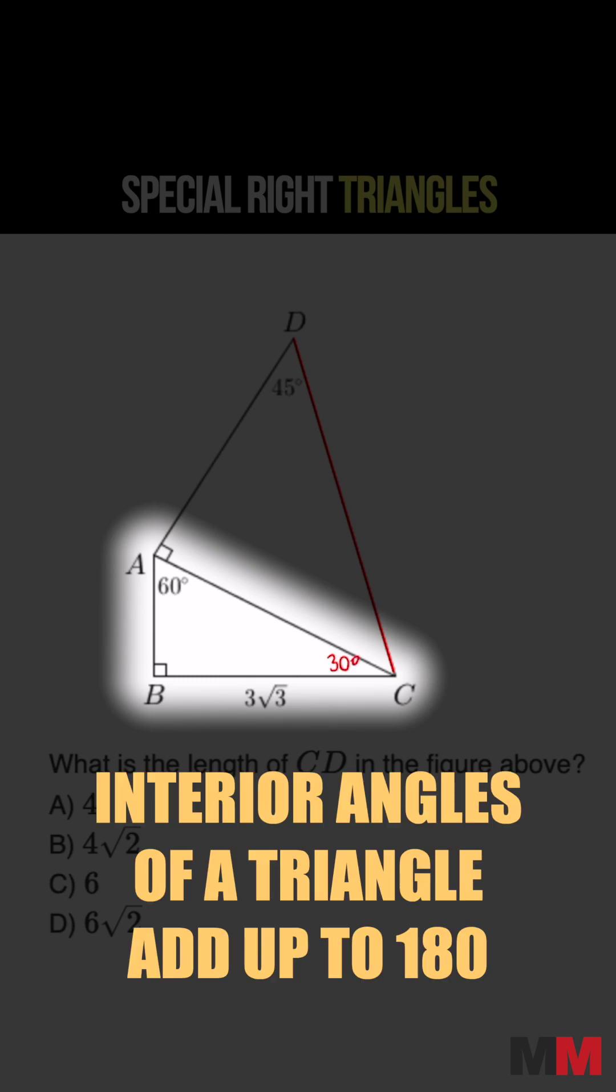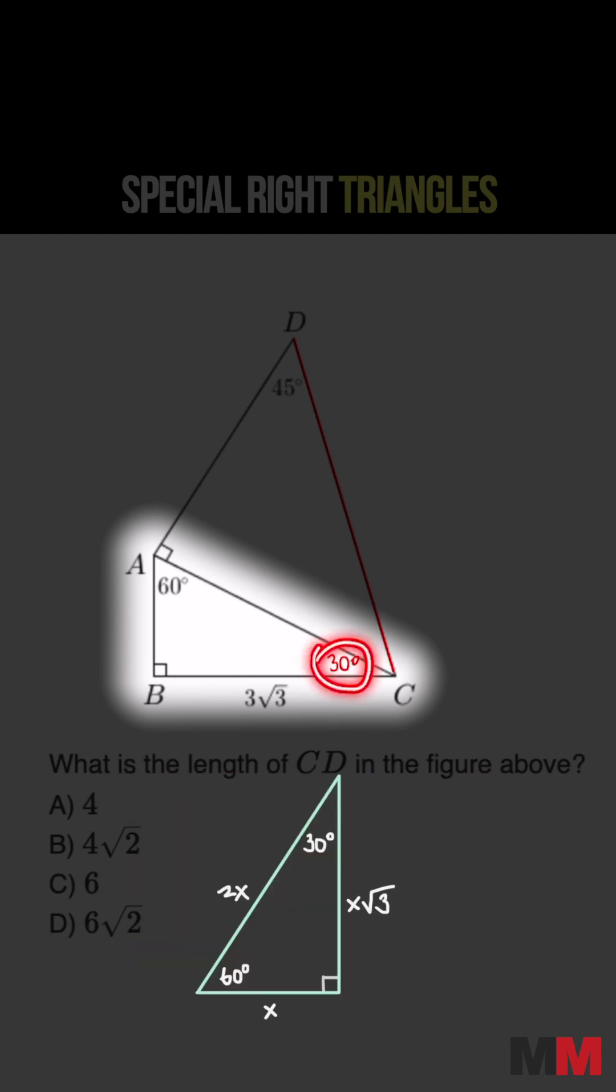And this is a special right triangle. In a 30, 60, 90, the one across 30 is going to be X. The one across 60 is X root 3. And the hypotenuse is going to have the relationship of 2X.